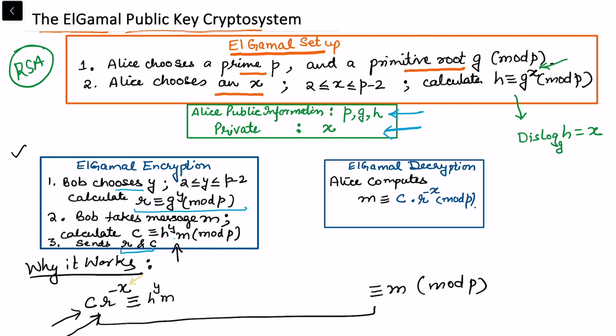r we have calculated as g^y, and then we are taking it raised to power minus x. This is congruent to g^(yx) times m, and then we can take g^(-xy).